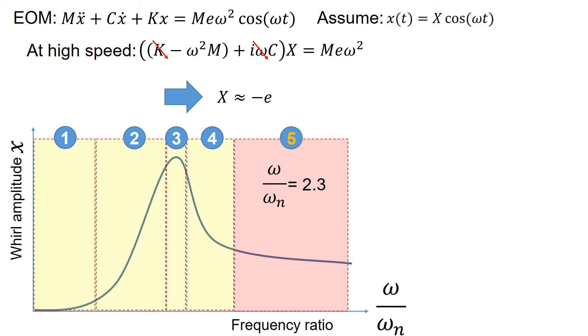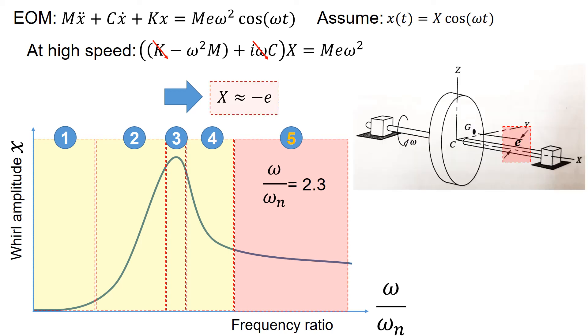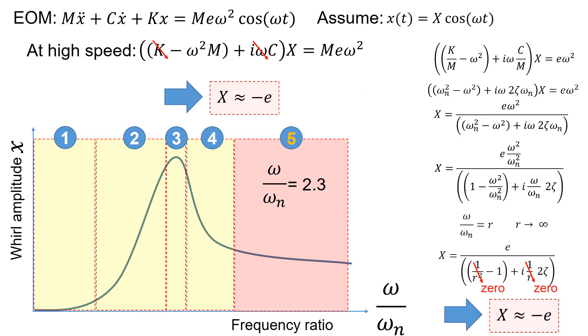Let's move on to the last area of interest number 5. This condition is where the running speed is high and we could assume that the frequency ratio is about 2.3. At this condition, the amplitude motion X is approximately similar to the eccentricity e, which is the distance from the rotational axis to the center of mass, as shown on the right figure. To derive the simplified equation X equals negative e, you could simply follow the steps shown on the right.